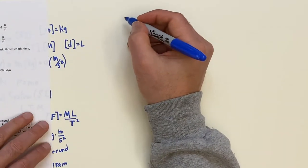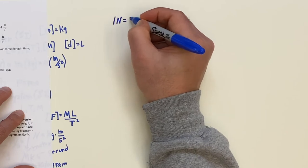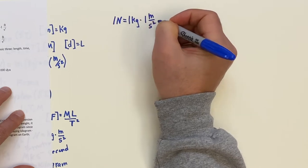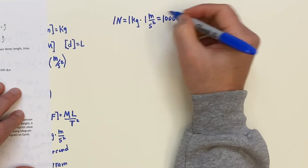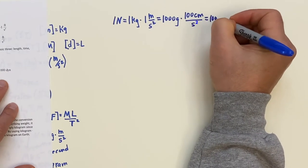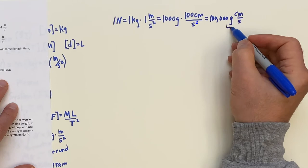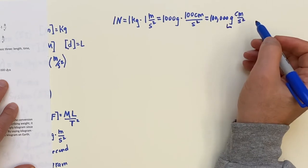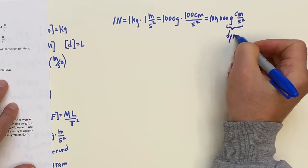F equals MA in the MKS system. You have Newtons. You have kilogram meters per second squared. In the CGS system, you have the dyne, and you have the gram centimeters per second squared. Remember that the Newton and the dyne and the pound are all defined respectively when you use F equals MA with one. One is everywhere. And then here in the British system, the pound is equal to the slug times feet per second squared.